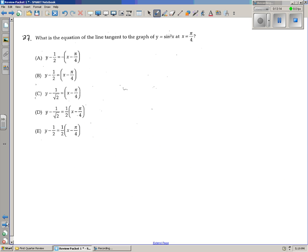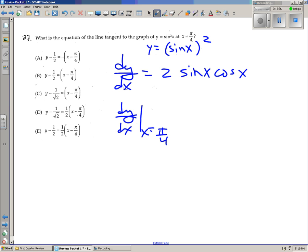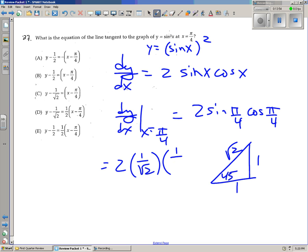Number 27, what is the equation of the line tangent to the graph of sine squared x at x equals pi over 4? I'm going to try to do this one real fast before we get to 15 minutes here. dy over dx. So y, by the way, is sine of x squared. So the derivative is 2 sine x cosine x. At pi over 4, we would have 2 sine pi over 4 cosine of pi over 4. Both sine and cosine of pi over 4 are 1 over radical 2. So we get 2 times 1 over radical 2 times 1 over radical 2, which is 2 over 2, which is 1. So the slope of the tangent line is just a positive 1.